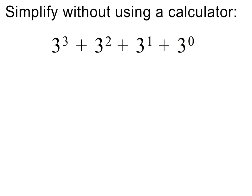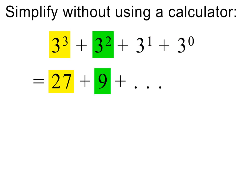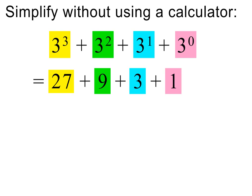Let's end with a few mixed examples. 3 to the power of 3 is equal to 27. 3 squared is equal to 9. 3 to the power of 1 is just 3. And 3 to the power of 0 is equal to 1. We then add to get the final answer. Please pause to check my working.